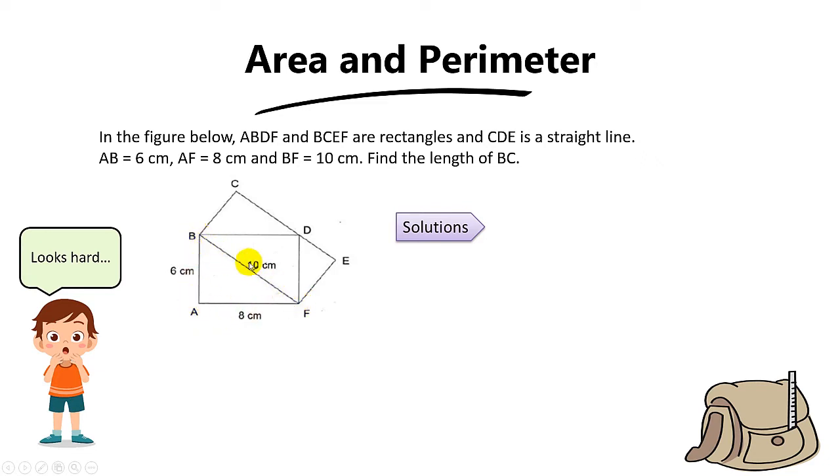To find the area of this triangle, you take half times base times height. So half times 8 times 6. The 8 cancels the 2, you get a 4, and 4 times 6 you get 24.